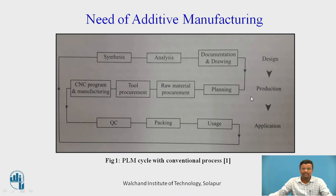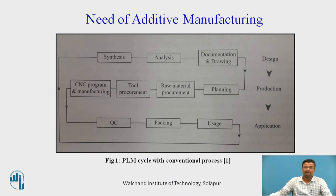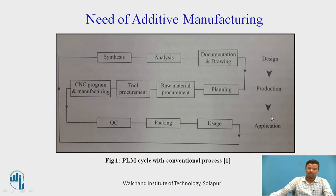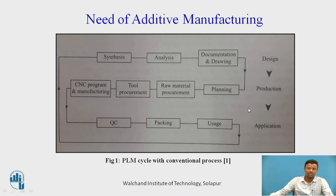In additive manufacturing, there are mainly three processes: design, production, and application. First we design and develop the 3D model — the computer-aided design that is a prerequisite for any additive manufacturing machine tool. After that, the component is manufactured with the help of the additive manufacturing machine tool. Application refers to how and where the customer will use the product. Now, what are the different components in the product life cycle management (PLM) cycle with respect to conventional processes?